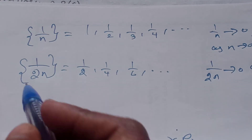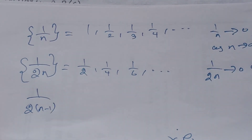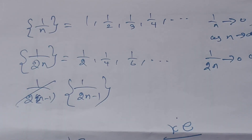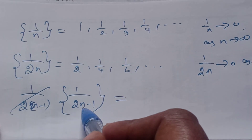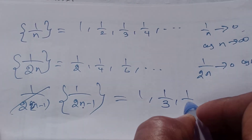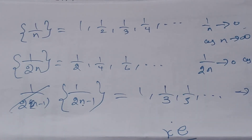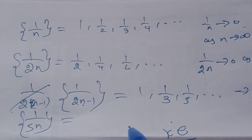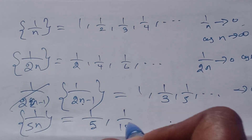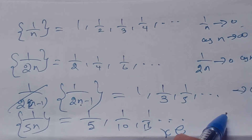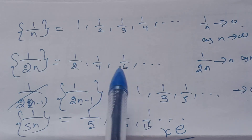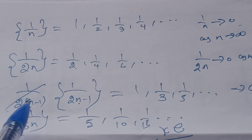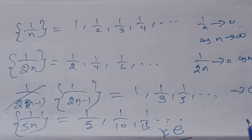Whether we select even terms, odd terms, or every fifth term such as 1/(5n) — giving 1/5, 1/10, and so on — all these subsequences of 1/n converge to the same limit 0. This is the direct result of the corollary: any subsequence of a convergent sequence converges to the same limit.